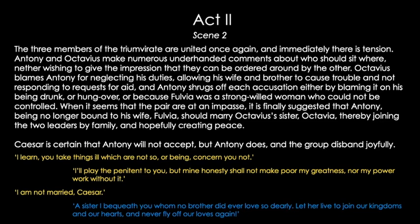When Caesar decides this marriage is going to happen, he says: 'A sister I bequeath you whom no brother did ever love so dearly. Let her live to join our kingdoms and our hearts and never fly off our loves again.' This is important foreshadowing — those who've read ahead know Antony doesn't stay with Octavia very long before going back to Cleopatra. Antony is effectively creating a temporary plaster on a wound that he's then going to rip off prematurely, angering Octavius even more.